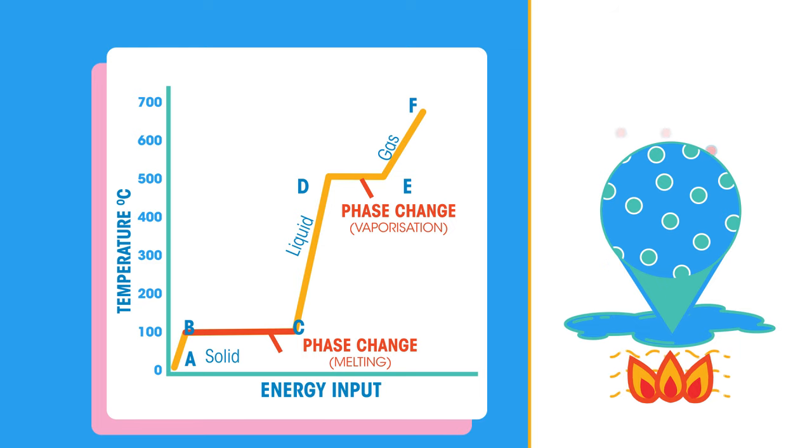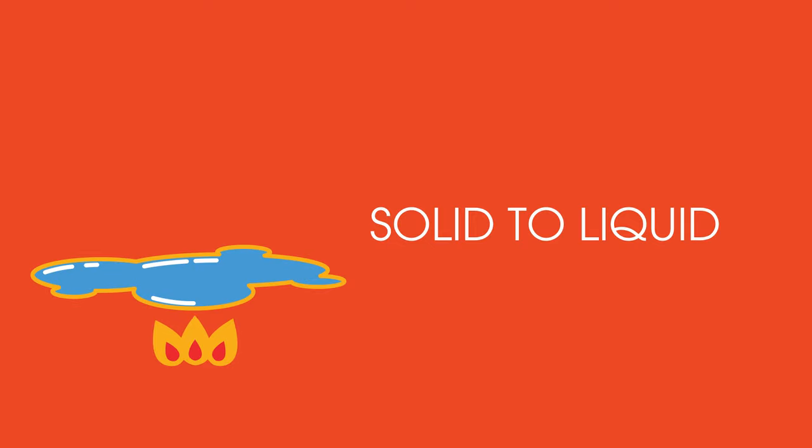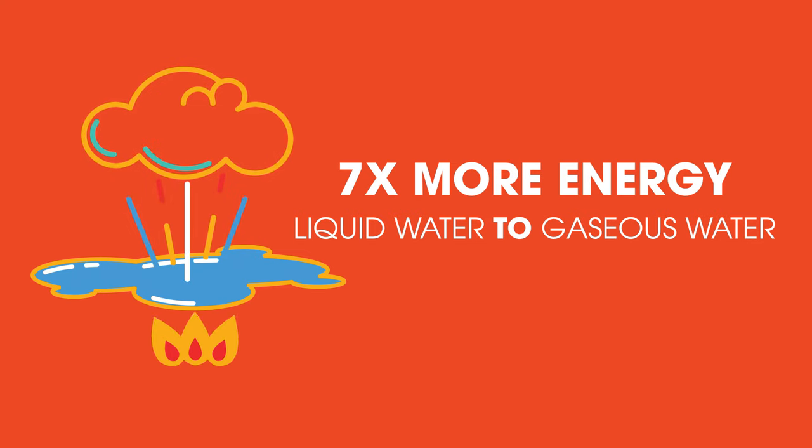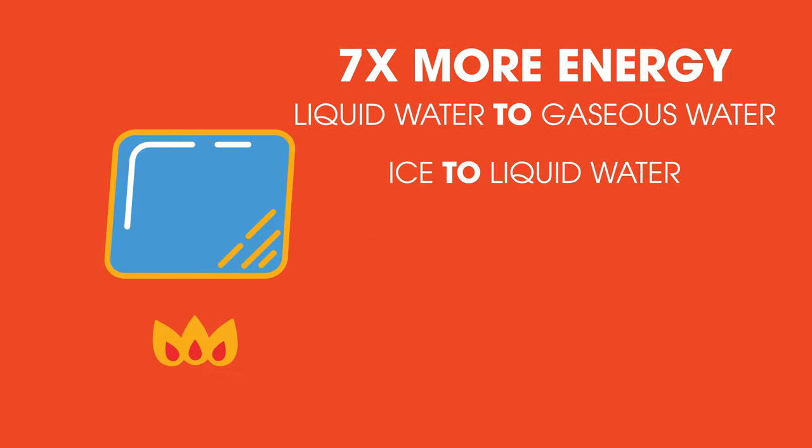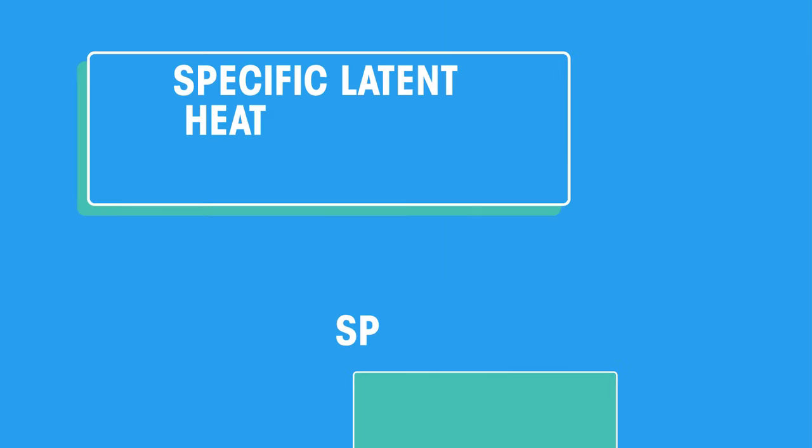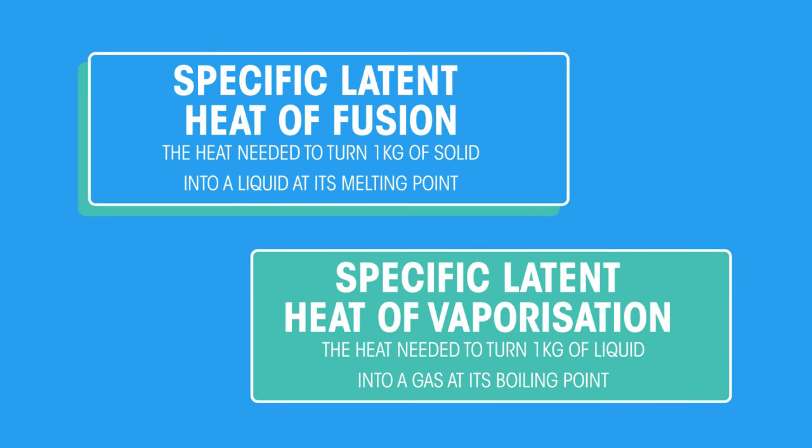Remember I said earlier that it may take a different amount of heat energy to change a solid into a liquid than to change a liquid into a gas? For example, it takes seven times more energy to turn liquid water into gaseous water than it does to melt ice into liquid water. This means a substance can have two specific latent heats.